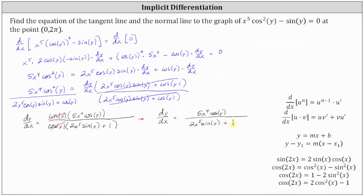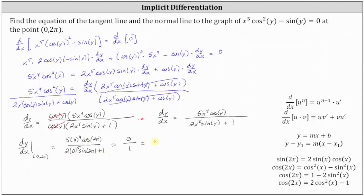To find the slope of the tangent line at the point zero comma two pi, we evaluate dy/dx at that point by substituting zero for x and two pi for y. This gives us five times zero to the fourth times cosine two pi, divided by two times zero to the fifth times sine two pi plus one. Cosine two pi equals one, so the numerator is five times zero times one, which is zero. The denominator is zero plus one, which is one. Zero divided by one equals zero, so the slope of the tangent line is zero.